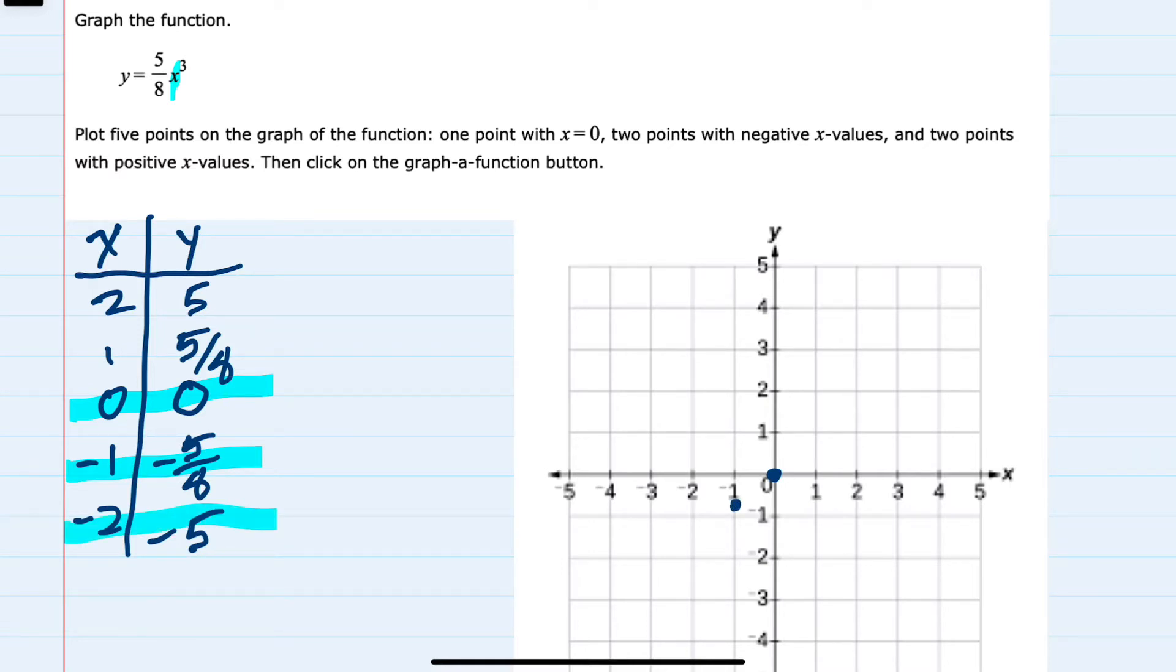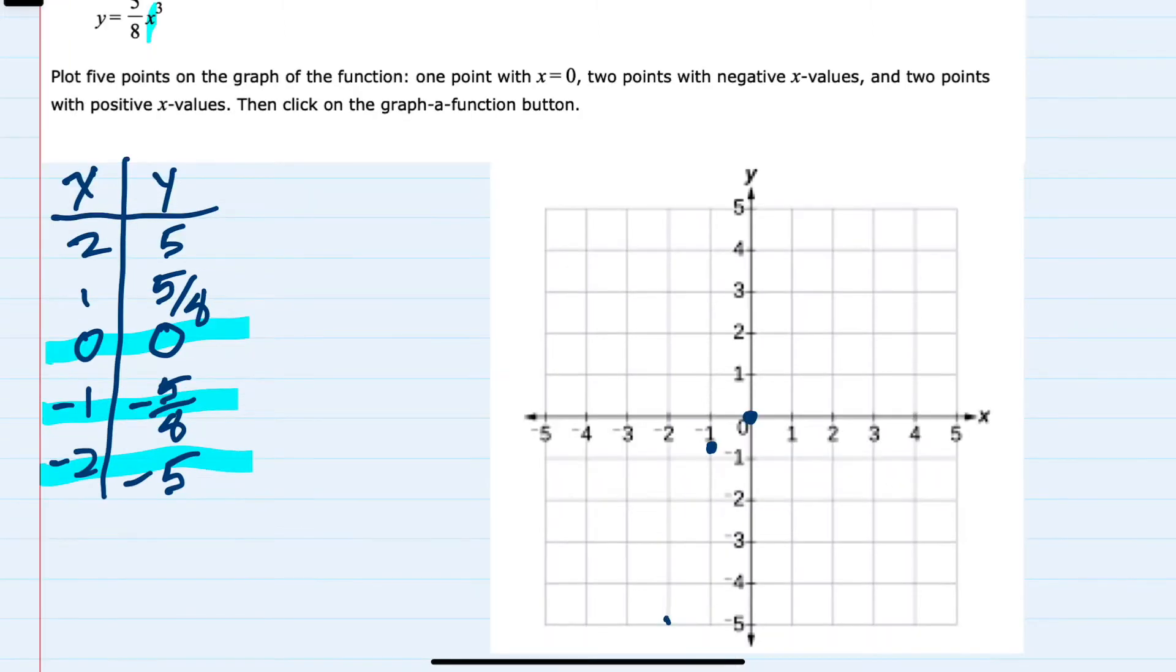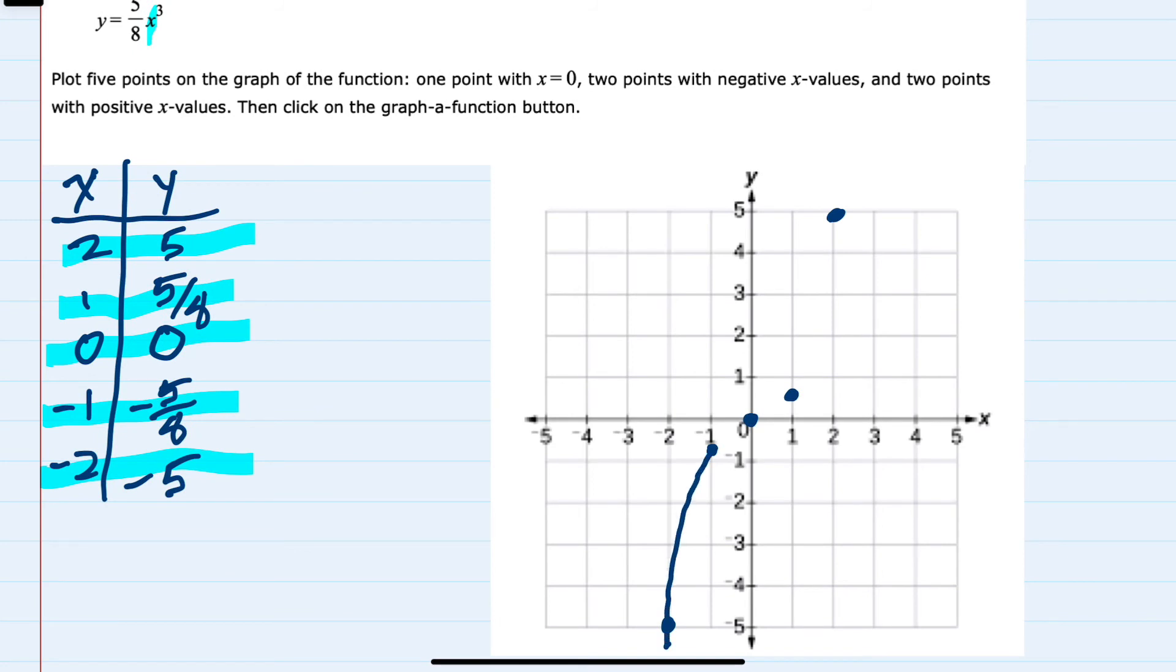And then negative 2, negative 5 is all the way down here. On the positive side, 1 and 5 eighths, 2 and 5, so our function will have this shape.